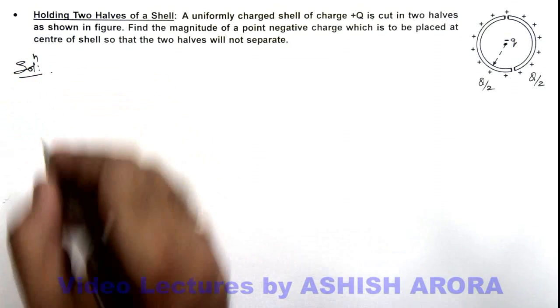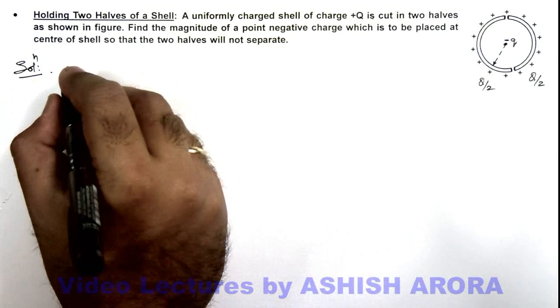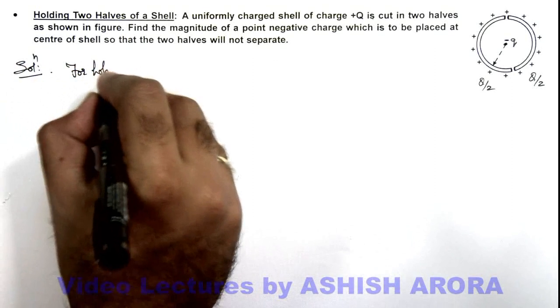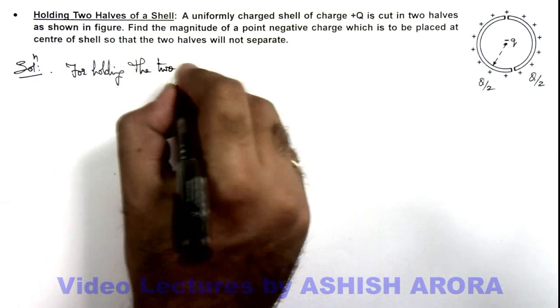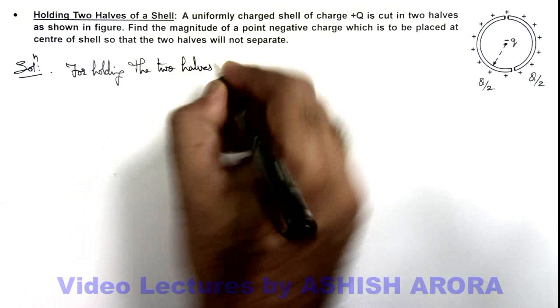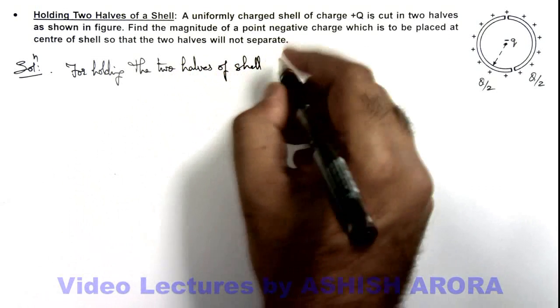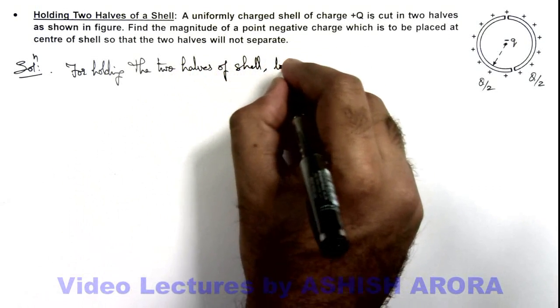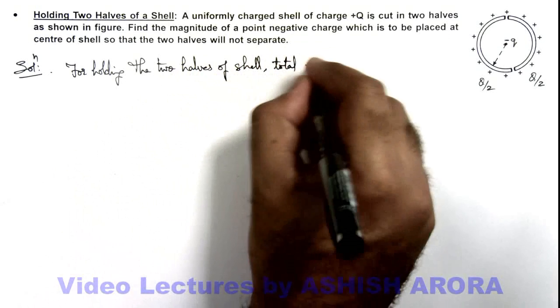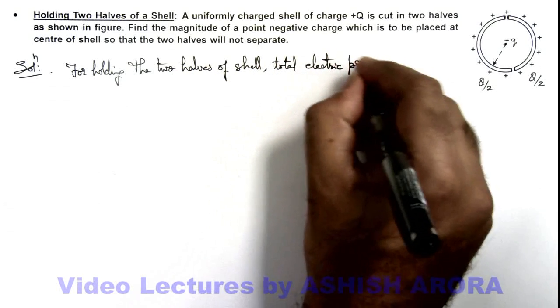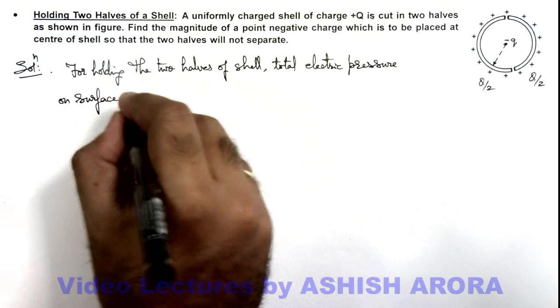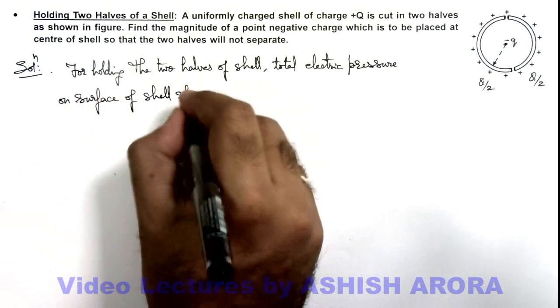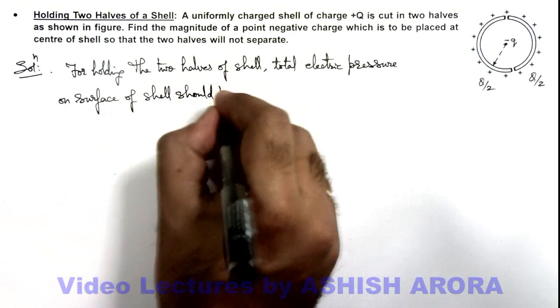So here we can see, for holding the two halves of shell, total electric pressure on surface of shell should be zero.